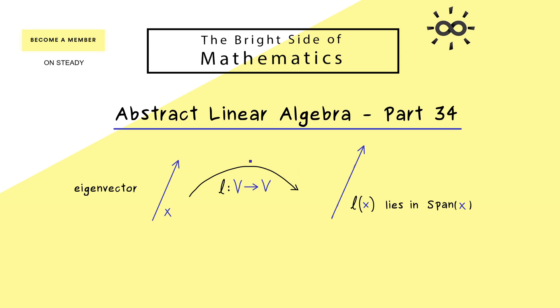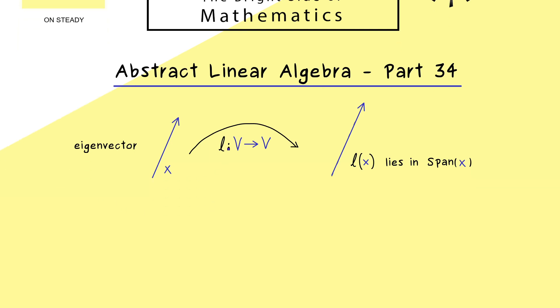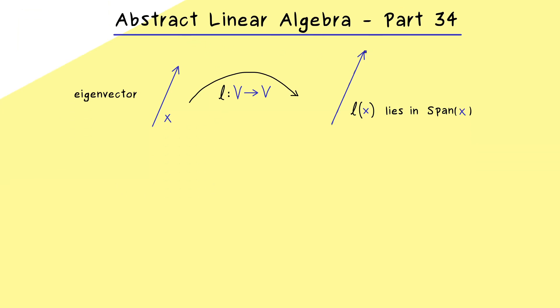This implies that the linear map is really simple for this given vector, because it's just scaling and nothing more. So you see, this is exactly the same idea as we have already discussed it for matrices in the linear algebra course.